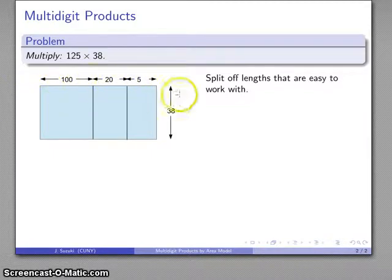Now I could do 100 by 38, 20 by 38, 5 by 38, but nothing in the rules says I can't split up the other factor as well. So let's split up that 38 into 30 and 8. So here's my rectangle once again, 125 by 38. And the area of this rectangle is going to correspond to this product.